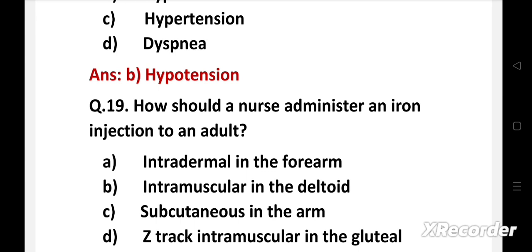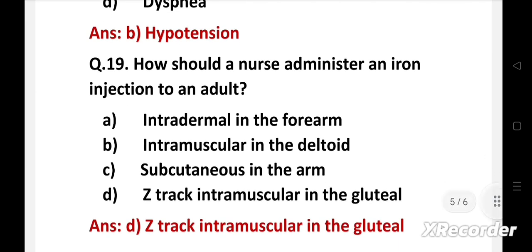Right answer is option D: Z-track intramuscular in the gluteal. Iron injection is irritable, so it is administered in well-developed muscles as deep IM. To prevent leak of injection, it is administered as deep IM using Z-track technique.